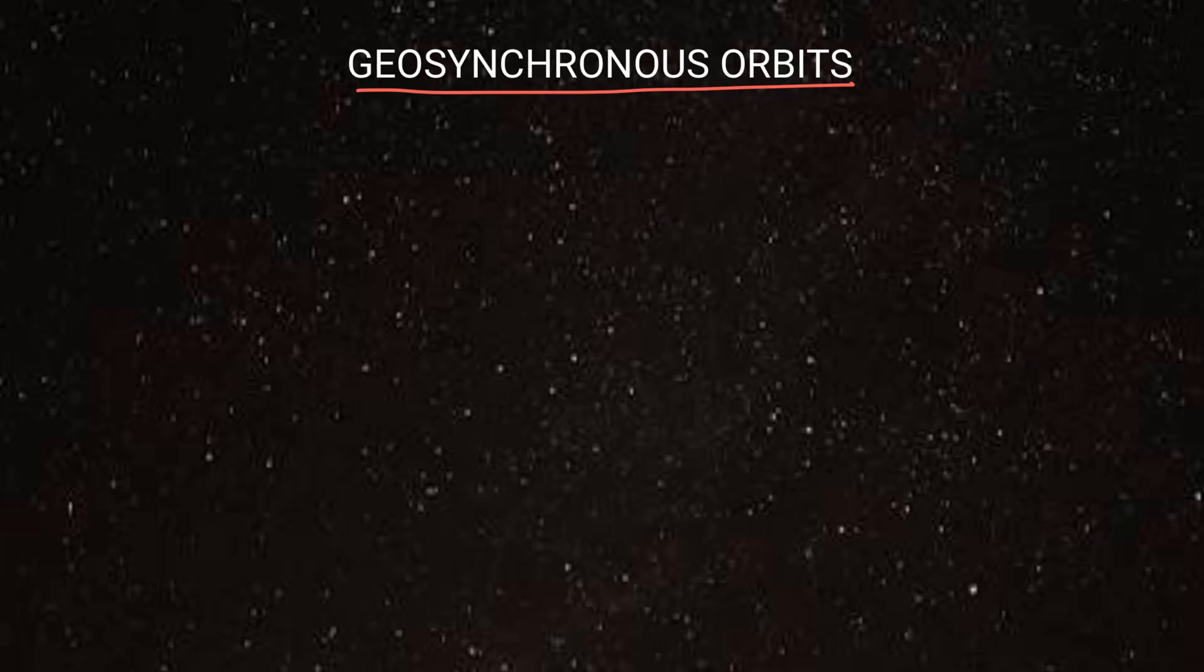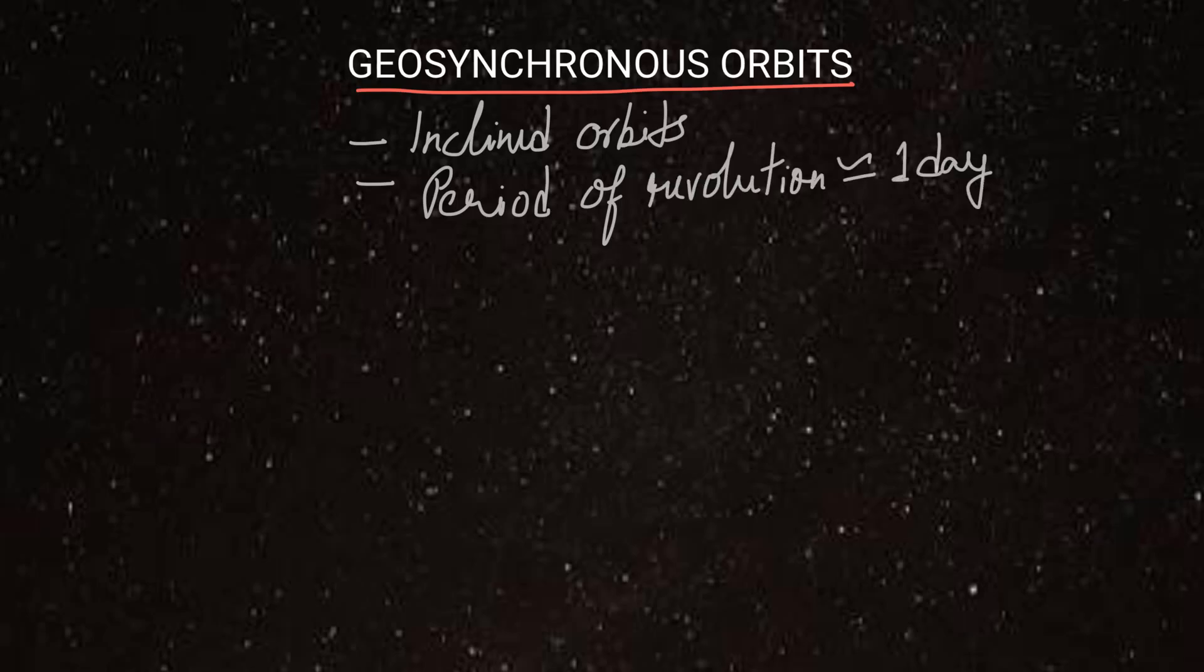We saw in the diagram some time back that geosynchronous orbits are slightly inclined from the axis of earth. And these satellites are placed such that their period of revolution around earth is exactly same as earth's rotational period. That is, these satellites take approximately 24 hours to take one round around the earth.